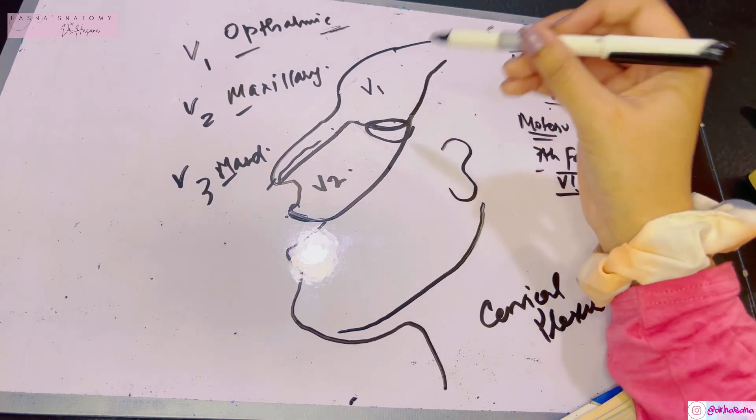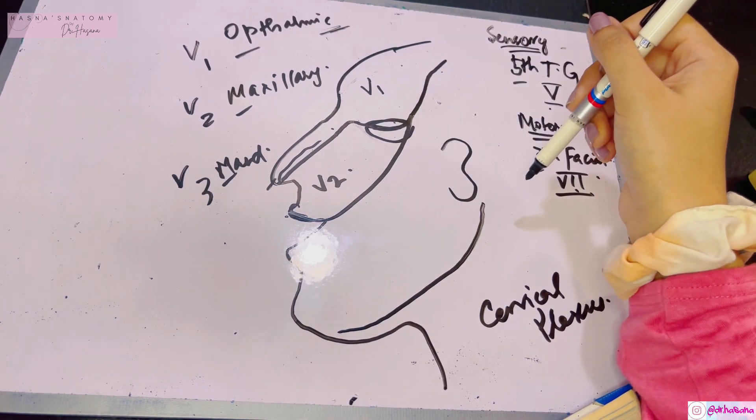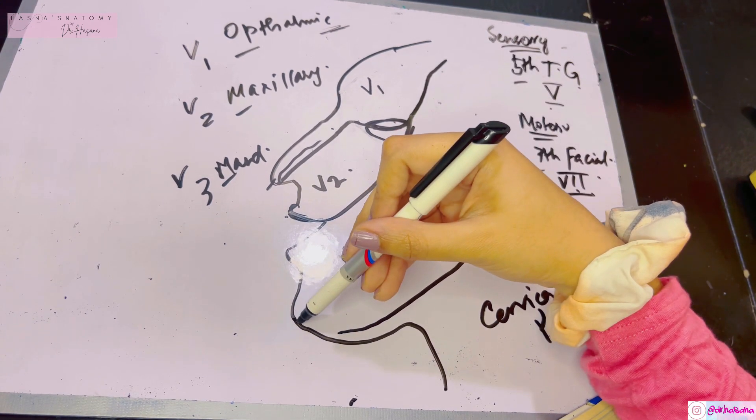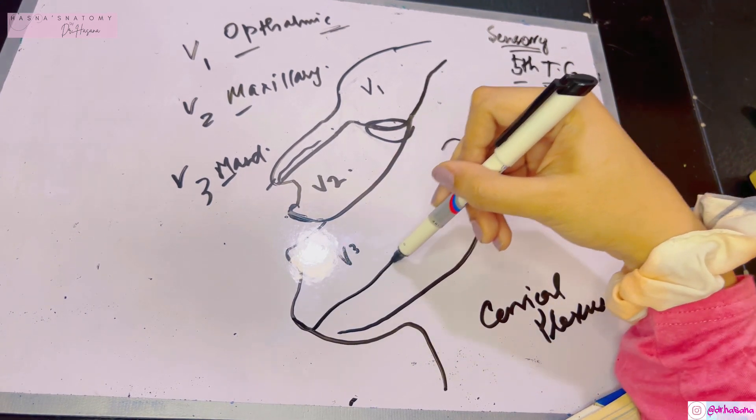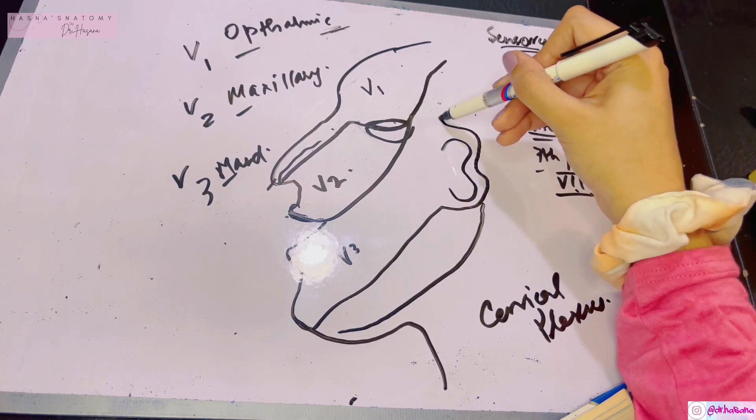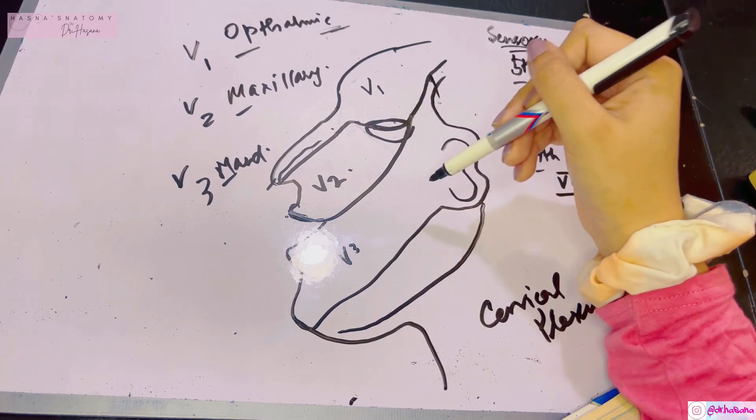Finally, the rest of the area is supplied by V3. To draw it, I recommend you draw a foot. A foot has a heel, so include the ear in this heel and take it back. This is the supply of V3, the mandibular nerve.